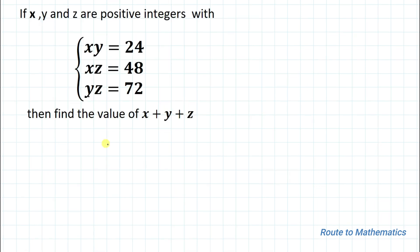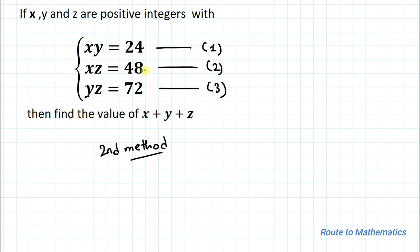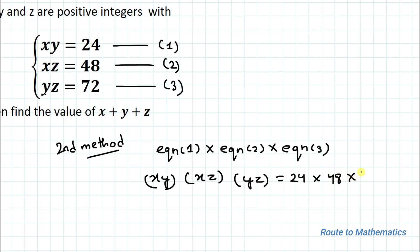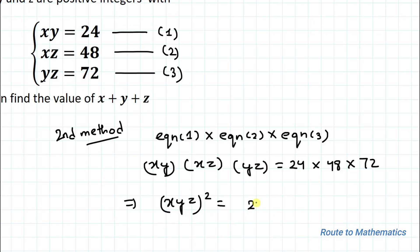Now let's look at the second method. We have our three equations: equation 1, equation 2, and equation 3. As you can see, all the equations are symmetric. Let's multiply all three equations together: xy × xz × yz = 24 × 48 × 72. This implies (xyz)² = 24 × 12², which gives xyz = 288. Let's call this equation 4.